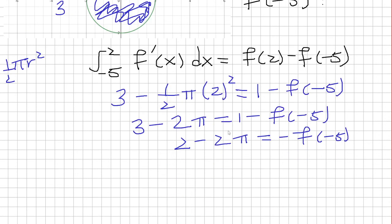Finally, we're going to multiply both sides by negative. And so we'll just have 2 pi minus 2 is equal to f of negative 5. And this is my final answer.